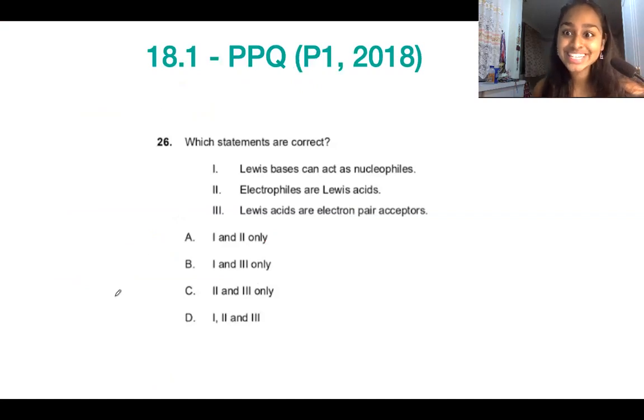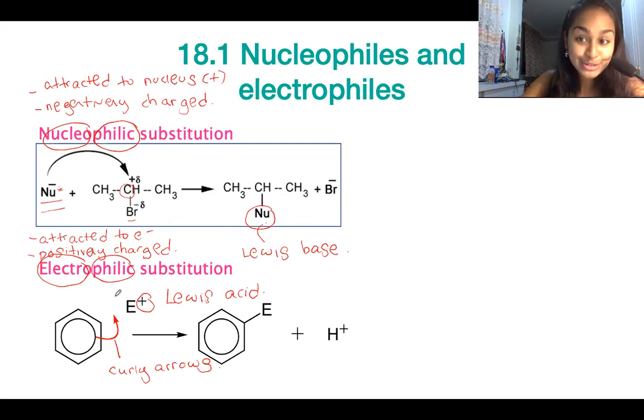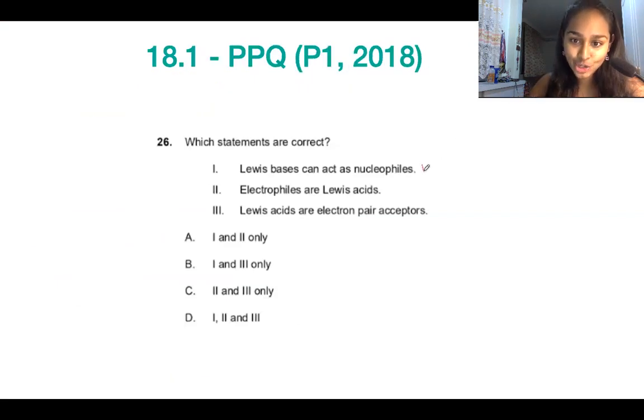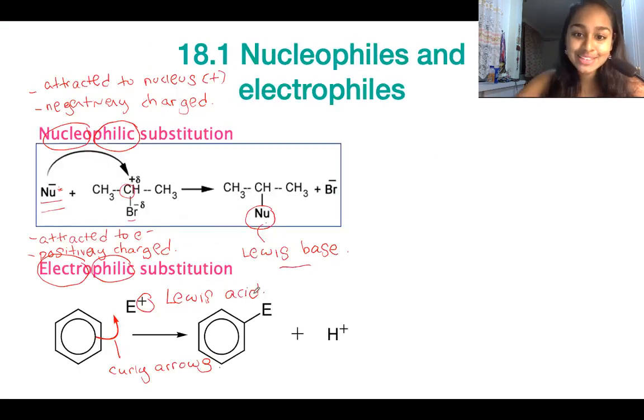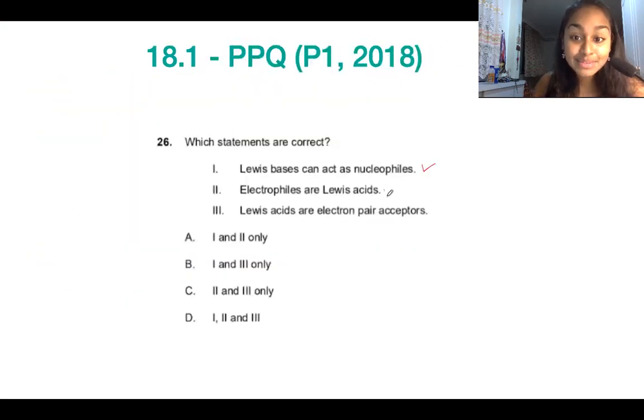Let's put this into a bit of practice then. So which statements are correct? Lewis bases can act as nucleophiles. So we saw here that nucleophiles are Lewis bases. And so that first answer is definitely correct. Electrophiles are Lewis acids. We saw here that that's also the case. So that second statement is also correct. And last but not least, Lewis acids are electron pair acceptors. By definition, that is also correct. And so our answer here is going to be D. So it's well worth being really familiar with the three examples, right? So electron-deficient compounds, complex ions, and electrophiles and nucleophiles.